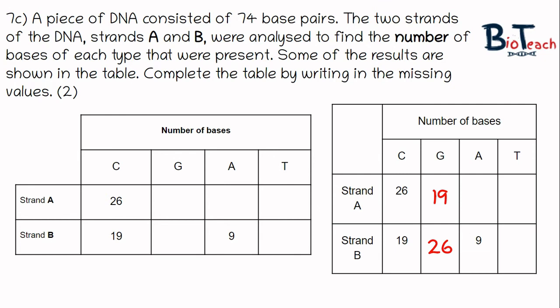Next, we know that there are 74 bases, so on this table you can see on strand B we've got three of the bases covered. We're looking for how many bases thymine would be on strand B, so if we just add 19, 26, and 9, we would get 54. We know that there's 74 bases, so we can do 74 minus 54 and we get 20 for thymine. That's what's left over.